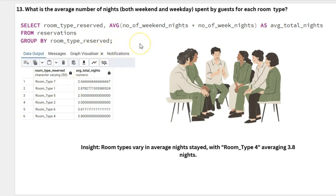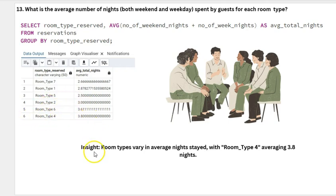What is the average number of weekend nights spent by guests for each room type? The average total nights spent per room type are: room type 7 at 2.6 nights, room type 1 at 2.8 nights, room type 5 at 2.55 nights, room type 2 at 3 nights, room type 6 at 3.6 nights, and room type 4 at 3.8 nights — the highest average stay.